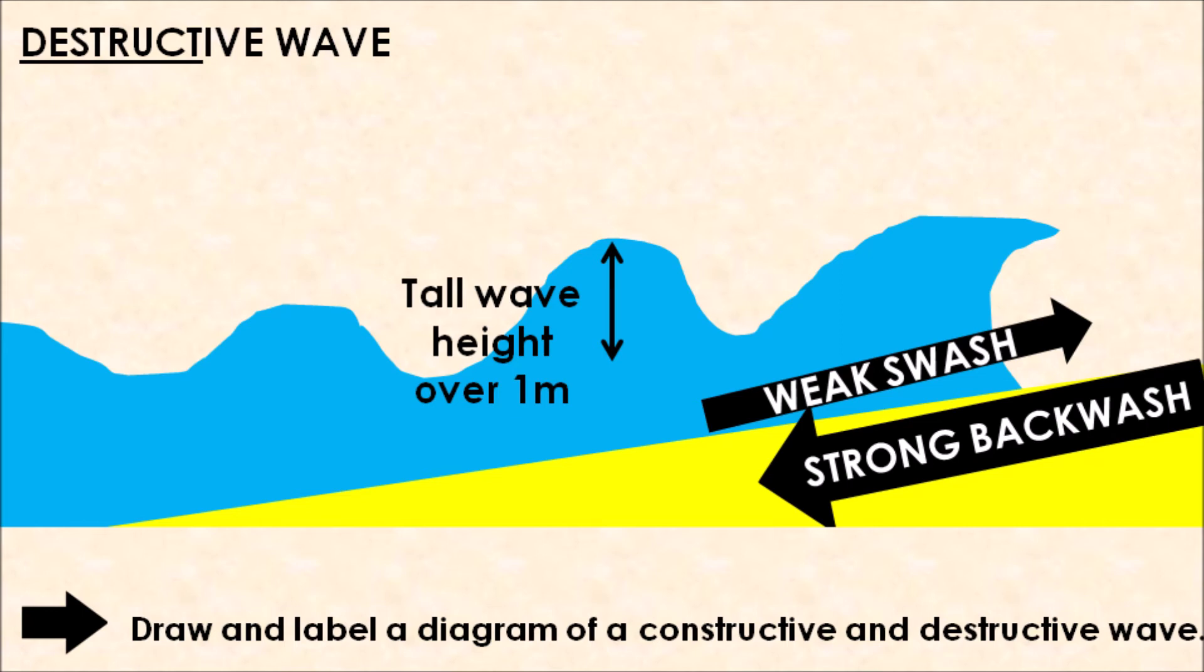This means that when the wave breaks onto the coastline, all of the energy is released, and that destructive wave has a very strong backwash as it retreats back into the body of water. We will get increased amounts of erosion on our coastline because of that strong backwash being able to use all its energy to pull sediment off the beach.